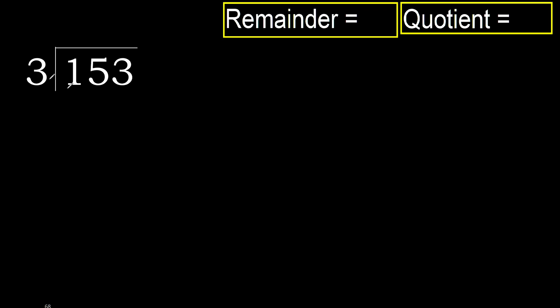153 divided by 3. 1 is less, therefore next. 15 is not less, therefore with 15 and 3, multiply by which number is nearest to 15.